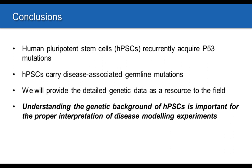To summarize the second part of the talk: human pluripotent stem cells, including ES and iPS cells, recurrently acquire mutations in TP53; they do carry disease-associated germline mutations, just as the general human population does; and these data will be provided as a resource to enable the rational selection of cell lines. The key takeaway is that understanding the genetic background of human pluripotent stem cells is critically important both for choosing the right cell line and for properly interpreting the results of disease modeling experiments.